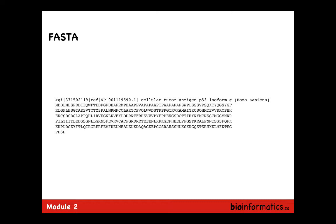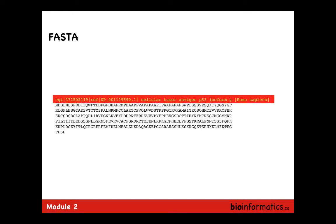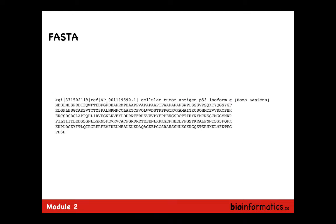FASTA is the simplest way of representing a sequence — it could be a DNA or protein sequence. You get a greater-than sign, then a line describing what the sequence is, then the sequence itself. The next entry starts with another greater-than sign. Importantly, just a greater-than sign with nothing is technically a valid FASTA format, though not useful because the sequence has no description. Ideally you have a unique identifier with a dot version number so you know exactly which version of the sequence you have.